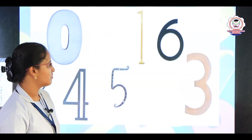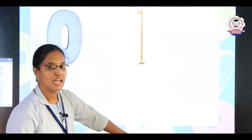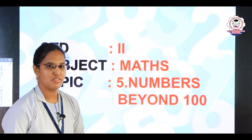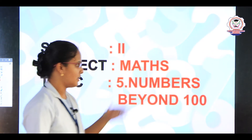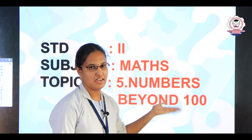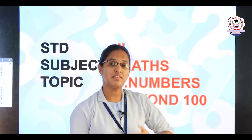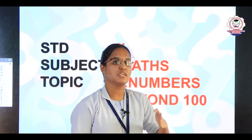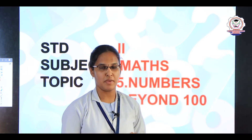What is this, children? They are numbers. Today we are going to see about numbers from Class 2 — numbers beyond 100. What is meant by 'beyond,' children? Beyond means 'after' — the numbers which come after 100, we are going to see in this topic.